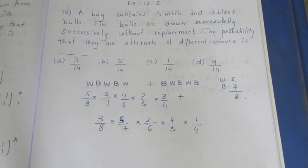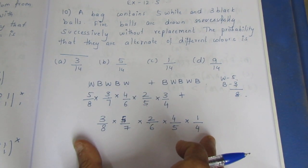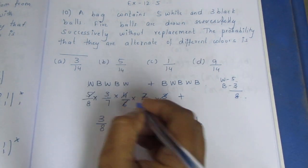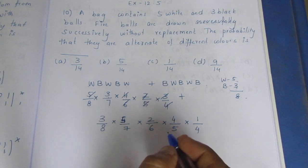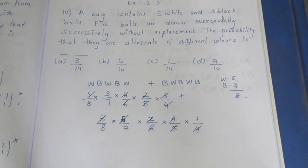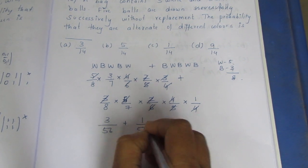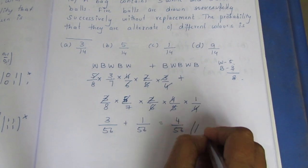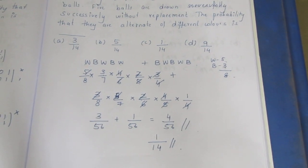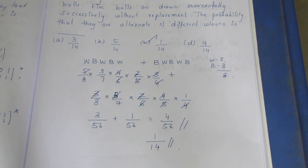So, if you take 1 by 4, we need to cancel the numbers and multiply. We can cancel: 3 twos are 6, 5 and 5 cancel, 4 and 4 cancel, 8 and 2, 7, 4 and 4 cancel, 5 and 5 cancel, 3 twos are 6 cancel. Result is 3 by 56 plus 1 by 56. Answer: 4 by 56, which simplifies to 1 by 14. Option C: 1 by 14 is the correct answer. Thank you.